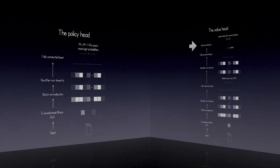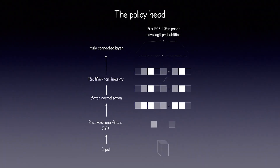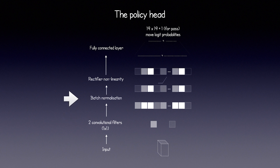And finally, we have the policy head, which outputs logit probabilities for each possible move. Input passes to two convolutional filters with a 1x1 kernel. Then we do batch normalization, pass it through a ReLU, and finally through a fully connected layer, which outputs probabilities for each square in the 19x19 grid, plus one additional option for passing the turn.